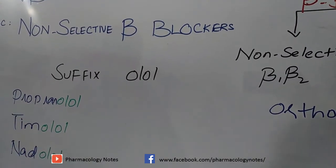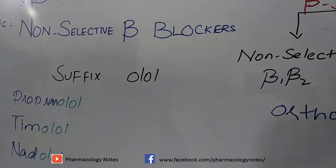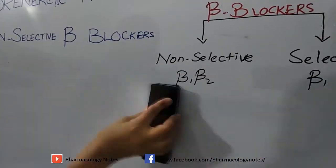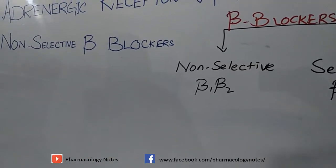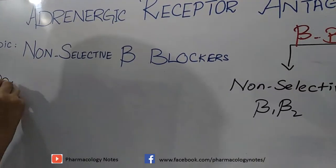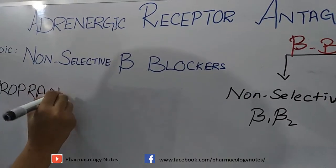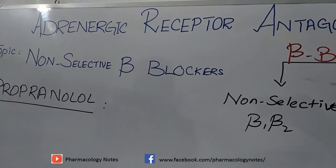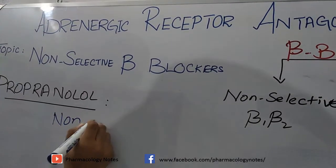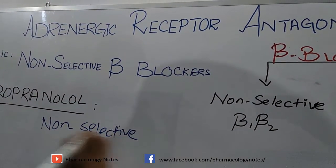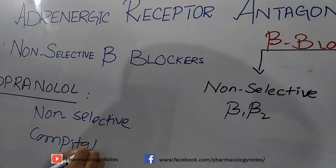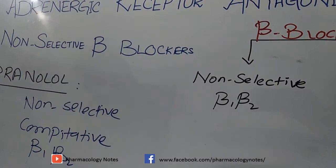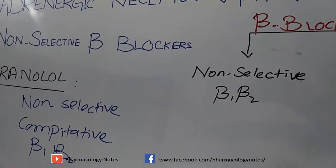Today we will first discuss propranolol and how it acts as an effective beta blocker. Propranolol is a non-selective beta blocker and competitive antagonist, with equal affinity for beta-1 and beta-2 receptors, meaning it acts equally on both receptor types.